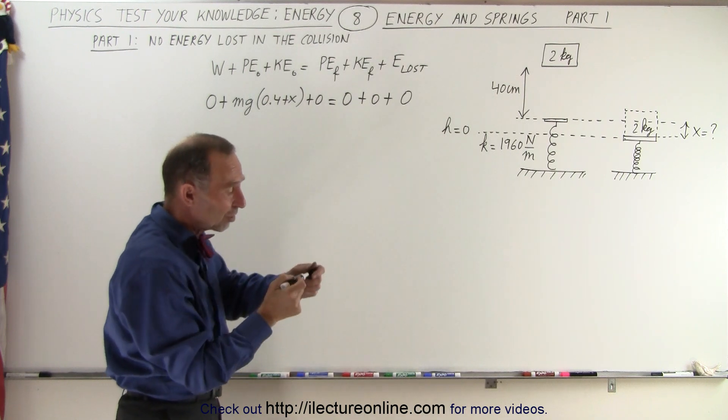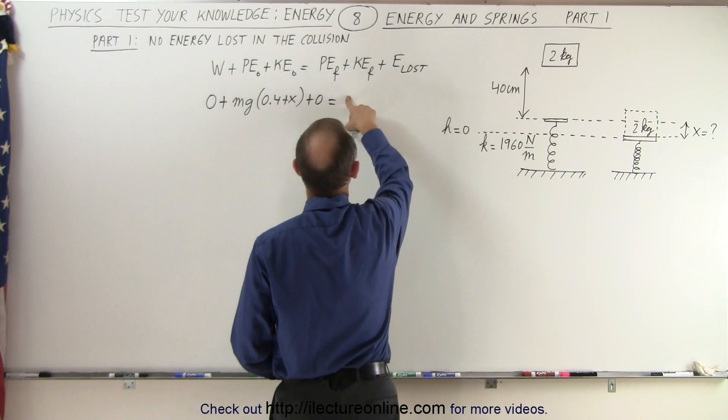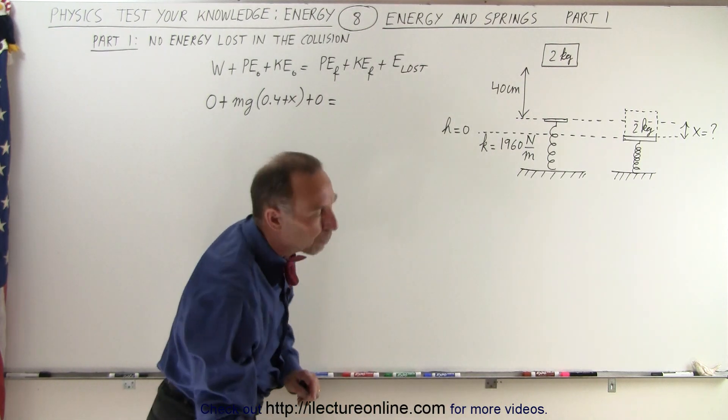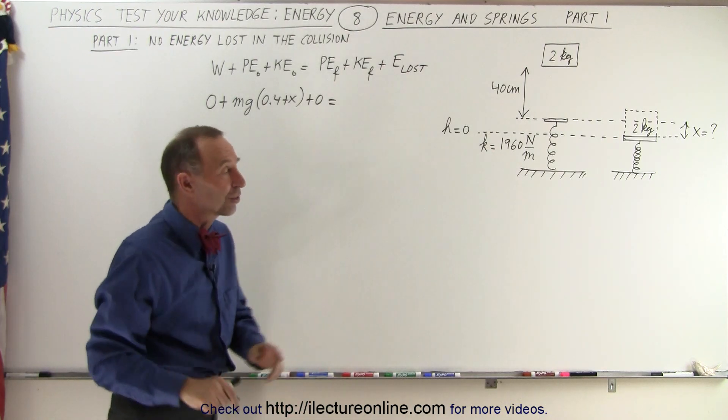We gain potential energy because of the compression of the spring. In other words, this isn't zero. Of course, we right away realize we had something on the left side, zero on the right side. That, of course, can't be true.